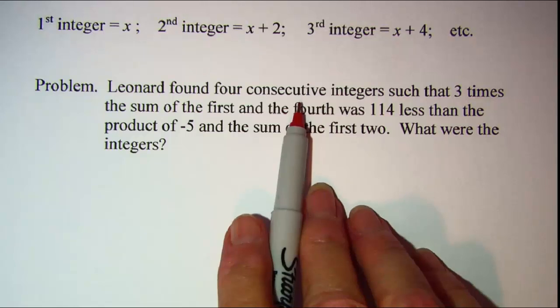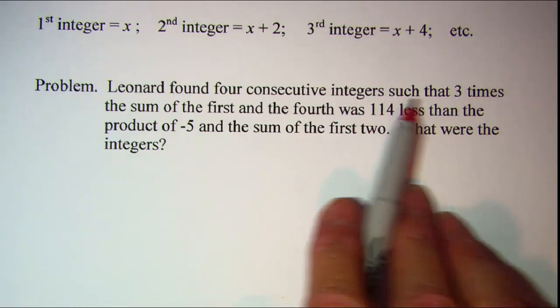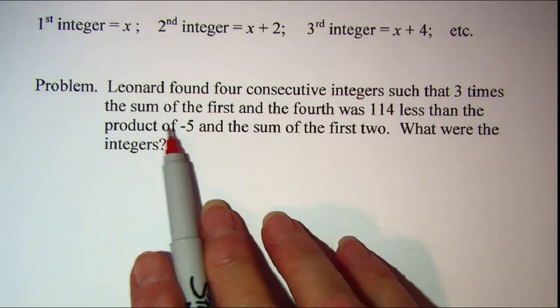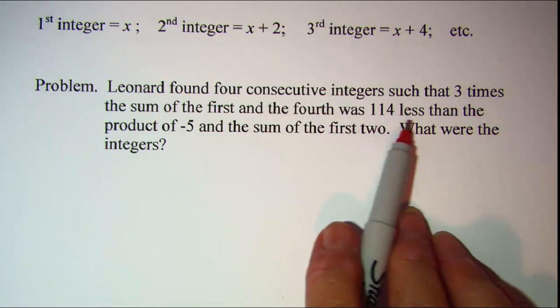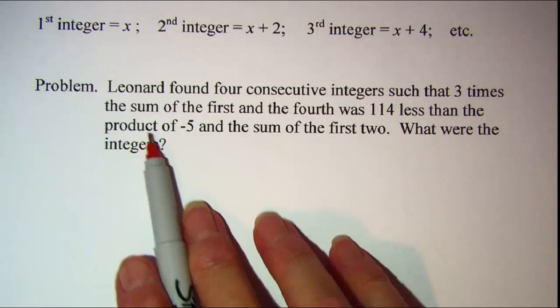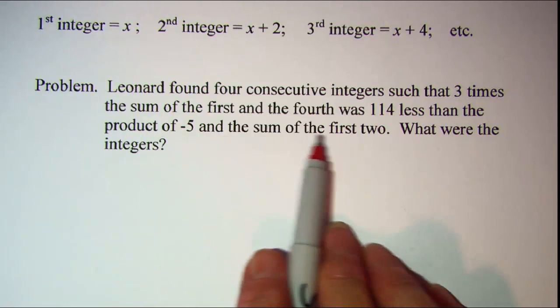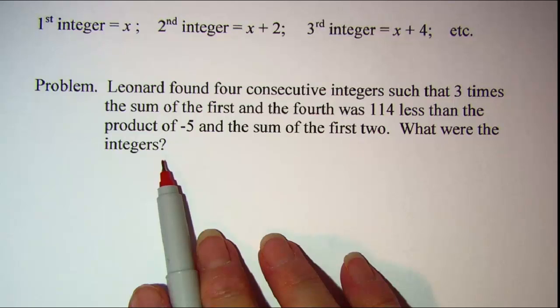Leonard found 4 consecutive integers such that 3 times the sum of the first and the fourth was 114 less than the product of negative 5 and the sum of the first two. What were the integers?